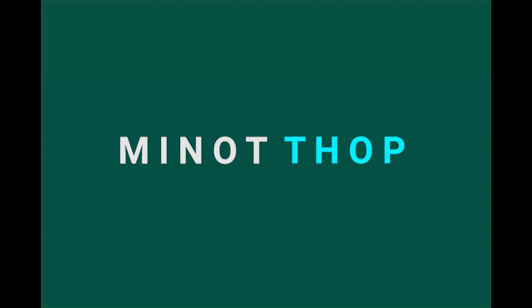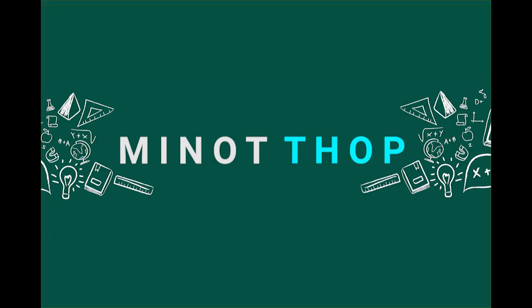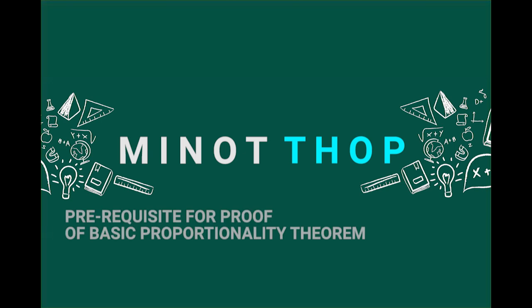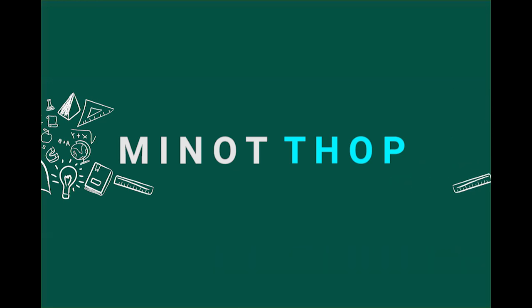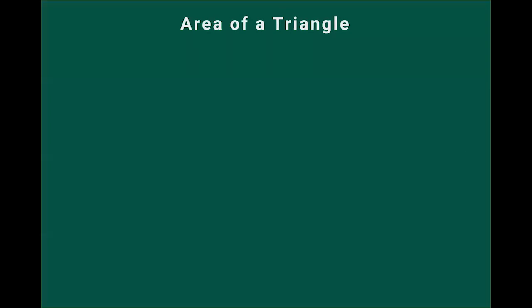Hello everyone. Today I wanted to do the mathematical proof for the basic proportionality theorem. But before doing that, it is very important that you have a clear understanding of how to find out the area of a triangle, and especially how to determine the base and the height of the triangle. There's one more property we have to revisit before doing the proof, but we will talk about that later. For now, we will concentrate on how to find out the area of the triangle.